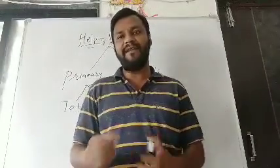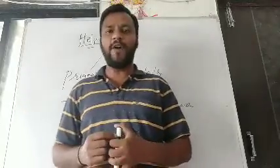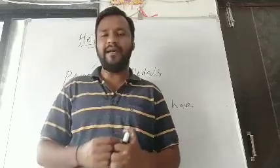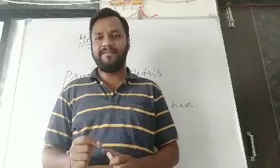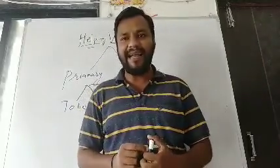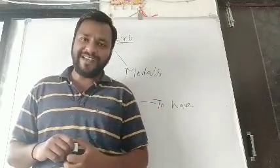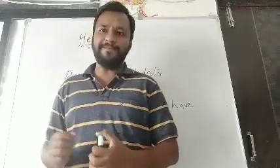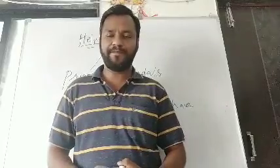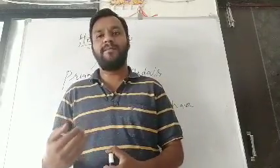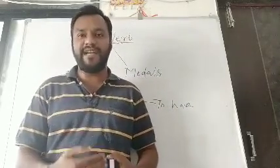'To have' forms: have, has, had, will have. As far as tenses are concerned, 'to have' forms are used in perfect tenses. Present perfect uses have/has, past perfect uses had, future perfect uses will have. Have/has been with -ing is used in present perfect continuous, had been with -ing in past perfect continuous, and will have been with -ing in future perfect continuous.